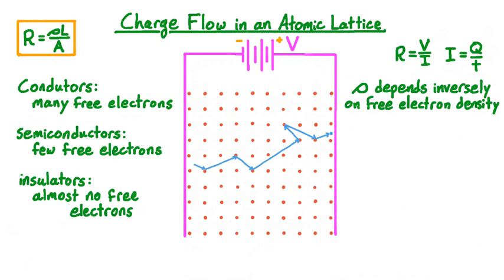To understand how this depends on the particular structure of the atomic lattice, let's track the motion of one electron as it moves. Instead of traversing the lattice in a straight line from left to right, the electron bounced around several times, colliding with the nuclei in the lattice. Because of these collisions, the electron traveled a longer distance and thus took a longer time to traverse the lattice than it would have if it had traveled in just a straight line. The higher the frequency of collisions, the longer it takes electrons to cross the lattice, and thus the larger the resistance. So the resistivity of a material depends directly on the collision frequency of its electrons.